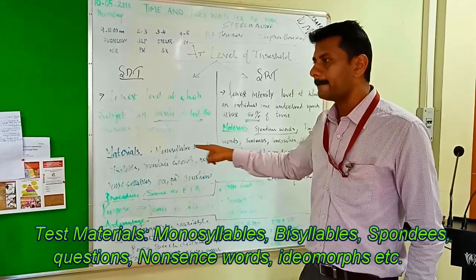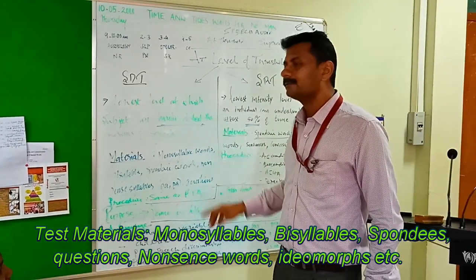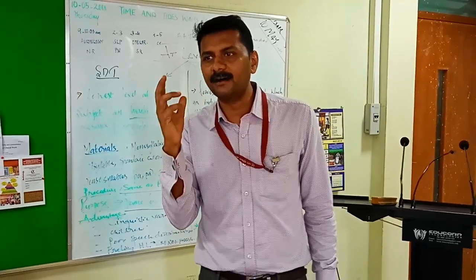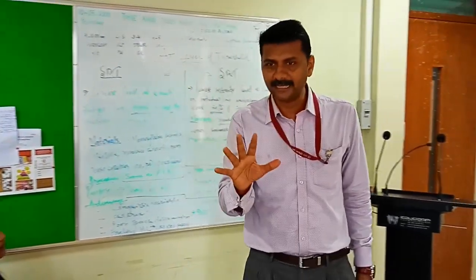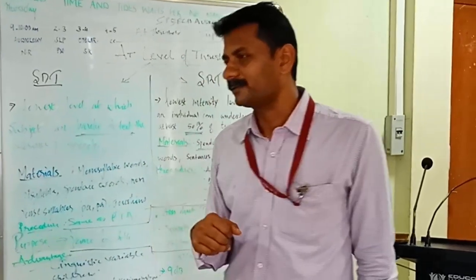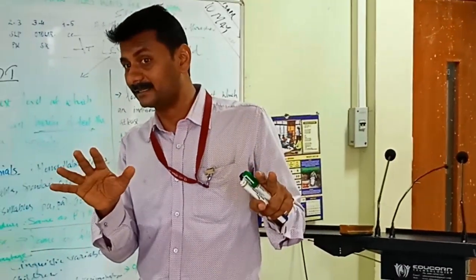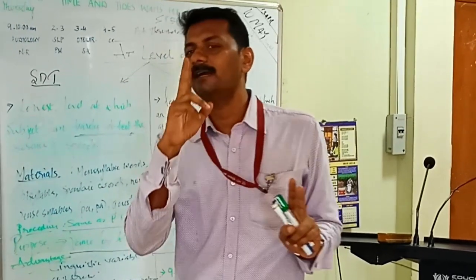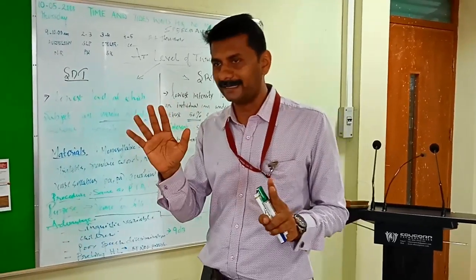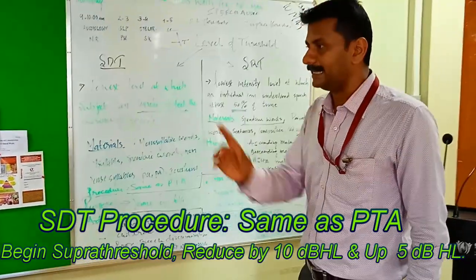The materials used for SDT are monosyllabic words, bisyllabic words, spondee words, and nonsense syllables. For example, with a small child who is not responding to formal speech stimuli, we can just call their name. Any response — localizing, eye-widening, or any suggestion of activity in response to the speech stimuli — would be accepted. It has quite a bit of flexibility.